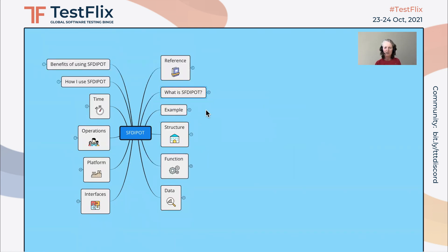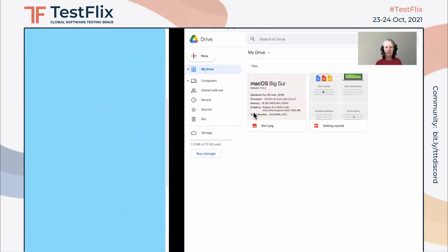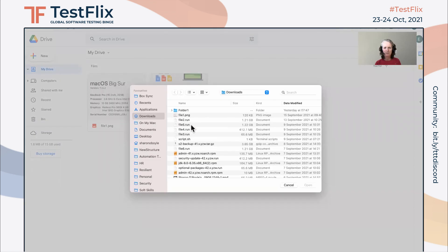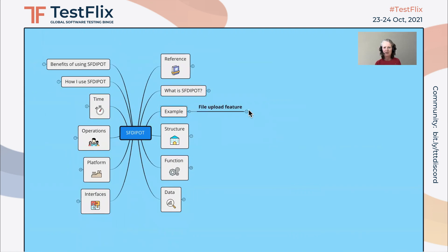So in order to see how to apply San Francisco Depot, we'll use an example of a file upload feature. We're talking about something similar to what we have here on Google Drive. You might have a button on the UI, you choose a file to upload, and you see the upload in progress, and you see that the upload has been successful.